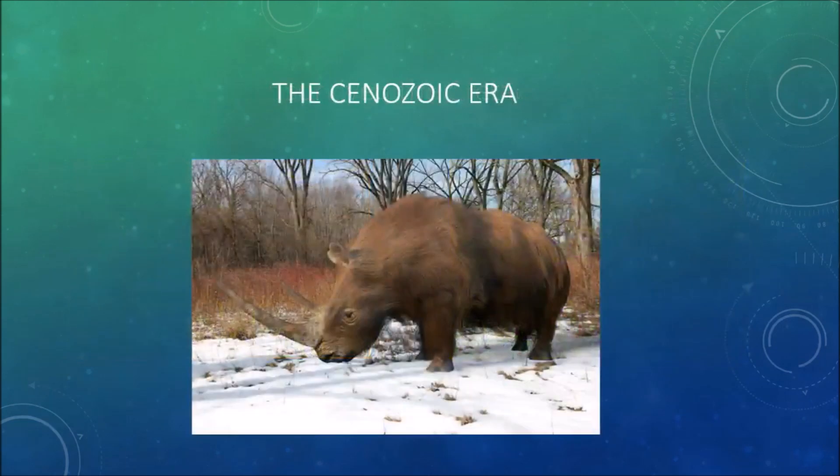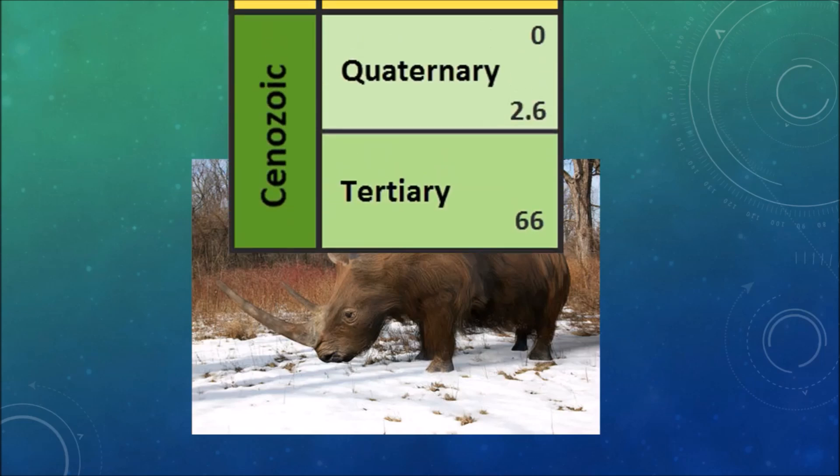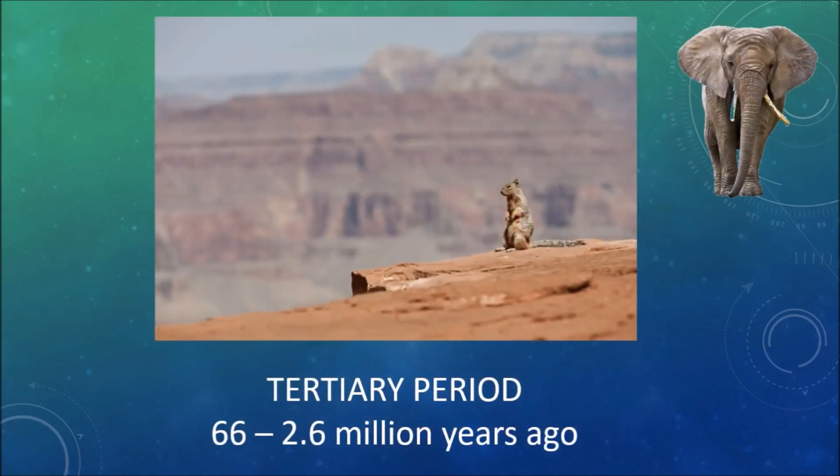Now we're in the Cenozoic era, the time since the Cretaceous catastrophe. Scientists divide the Cenozoic into two main periods, the Tertiary and the Quaternary. In the Tertiary, mammals finally had room to grow. They started out as timid burrowers, no bigger than a cat. But before long they had diversified, with elephants stomping around on land, and whales cruising the oceans.